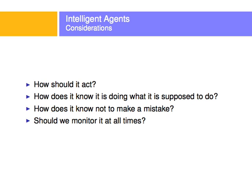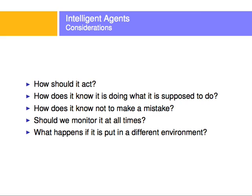Should we monitor this agent at all times? For example, a robot trying to defuse a bomb might need constant monitoring. A dialogue agent on a smartphone — maybe we want to check what it's doing every so often just to know the dialogue is working correctly. What happens if the agent is put in a different environment? For example, if the dialogue from a phone is put in an environment where people have an accent it wasn't trained on, or if the vacuum cleaner is put outside on grass — these are all considerations for designers of intelligent agents.